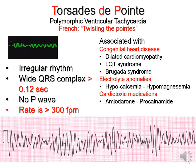Then you've got torsades de pointes, also known as polymorphic ventricular tachycardia. Torsades de pointes basically means 'twisting of the points' in French, because it was a French physiologist who discovered it. This is a very, very irregular rhythm — positive and negative — with a wide QRS complex greater than 0.12 seconds. There's no P-wave, and the rate is typically greater than 300 fibrillations per minute. It's associated with congenital heart disease, long QT syndrome, Brugada syndrome, hypocalcemia or hypomagnesemia, and cardiotoxic medications such as amiodarone, procainamide, quinidine, and sometimes sotalol. The patient can actually be conscious, though not for long.